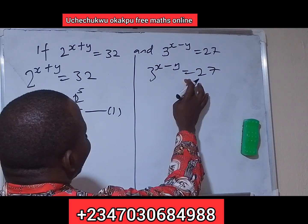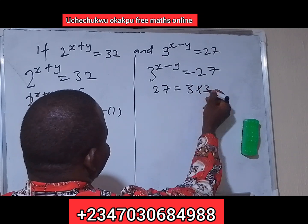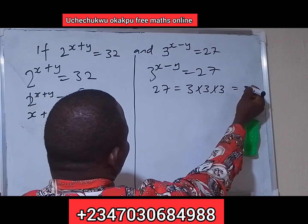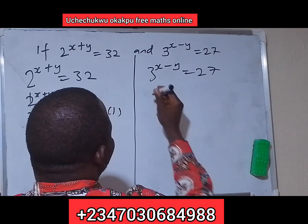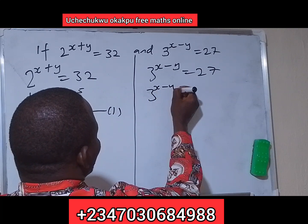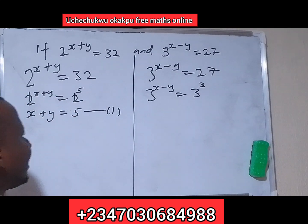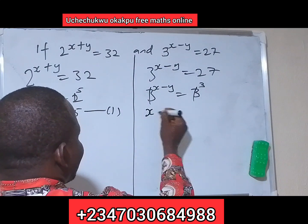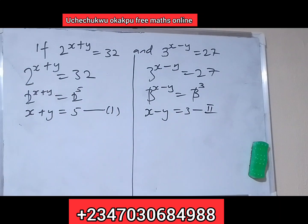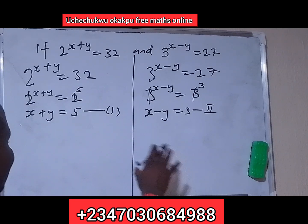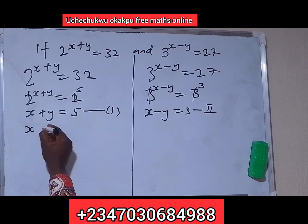Now 27 equals 3 times 3 is 9, times 3 is 27, which is equal to 3 raised to the power 3. So we have 3 raised to power x minus y is equal to 3 raised to power 3. The bases are the same, so we compare the powers: x minus y is equal to 3. This is equation 2.